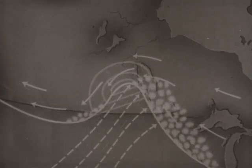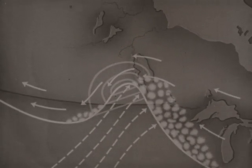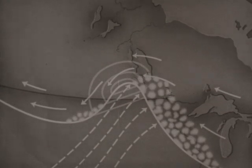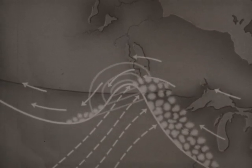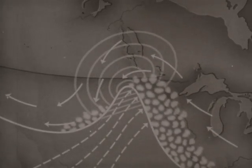No clouds have appeared on the warm sector, as there is no lifting process in operation there. There are now intermittent showers along the cold front. Clouds are spreading farther ahead of the warm front, reaching to a distance of several hundred miles.